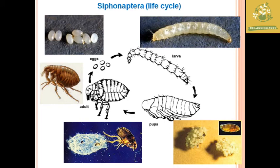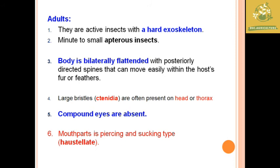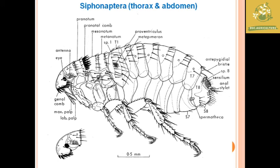The adult flea is an active insect with a hard exoskeleton. It is a small, laterally flattened insect. The body has posterior-directed spines making it easy to move through host feathers or fur and difficult to remove. Looking at the head and thorax, compound eyes are absent. The mouthparts are stylet-type, piercing and sucking. The important family is Pulicidae, the common fleas. This is the classification of Siphonaptera as an ectoparasite of warm-blooded animals.